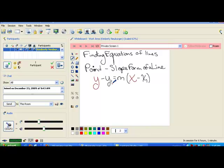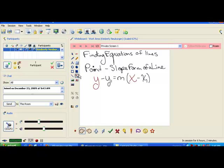Hi class. Today we're going to be talking about finding equations of lines. When you try to find an equation of a line, the form of a line that you use is called the point-slope form.